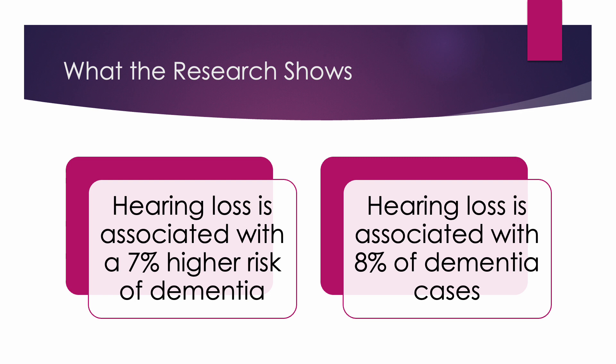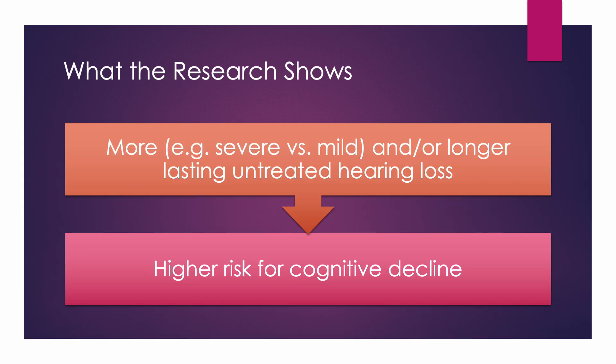Now we know how hearing loss and cognitive decline are linked — how strong is the correlation between hearing loss and dementia? Hearing loss is associated with a 7% higher risk of dementia, and hearing loss is associated with 8% of dementia cases. These are correlational, not causational. However, if there is an easy intervention, would you not want to partake in it? More significant hearing loss and longer lasting untreated hearing loss lead to higher risks for cognitive decline. One of the most well-known statistics in audiology is that it takes a person an average of 7 years to seek intervention for their hearing loss — that could be 7 years missing out on information and feeling fatigued in social settings.